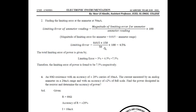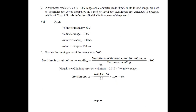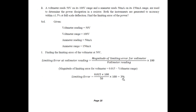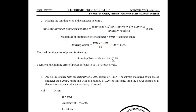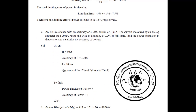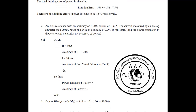The total limiting error is the limiting error of the voltmeter plus the limiting error of the ammeter, because power is voltage multiplied by current. So 3 percent plus 4.5 percent equals 7.5 percent, and this is your limiting error.